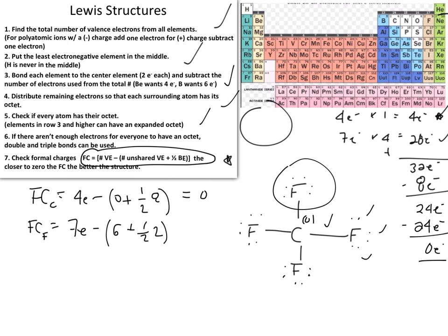Seven minus six minus one equals zero. The formal charge on fluorine is zero. Since all fluorines are bonded identically, they all share the same formal charge. Make sure to put parentheses around formal charges to avoid confusion with electron notation.